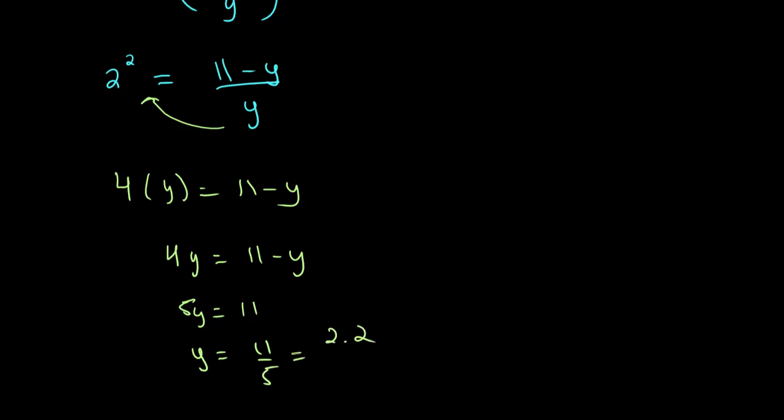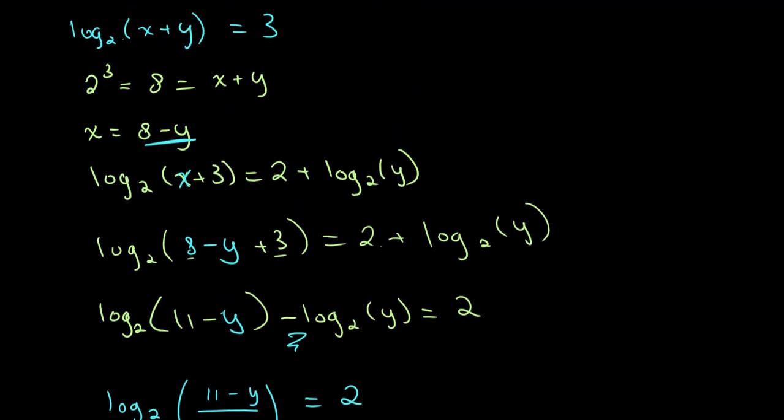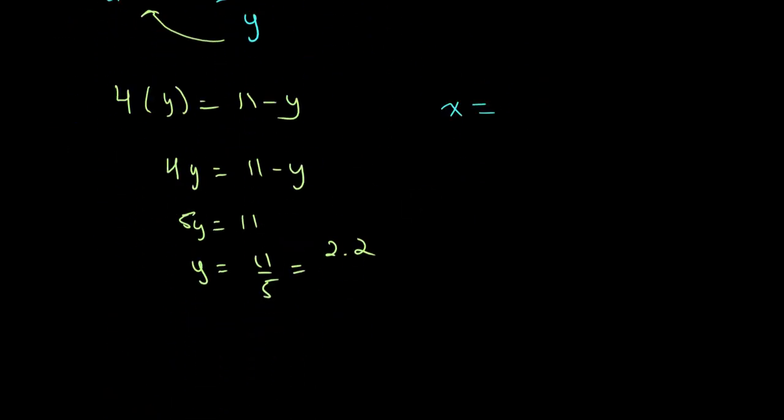Now, we need to solve for x by plugging that into this equation that we got over here. So, let's rewrite that. x is equal to 8 minus y. x is equal to 8 minus 2.2. x is equal to 5.8. So, our final answer is y is equal to 2.2 and x is equal to 5.8.